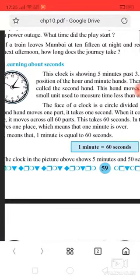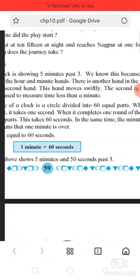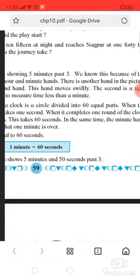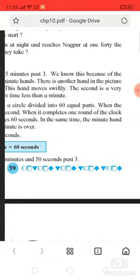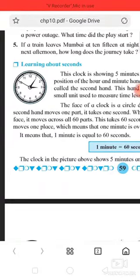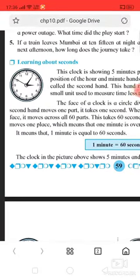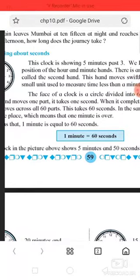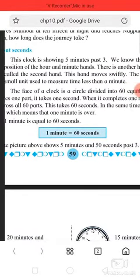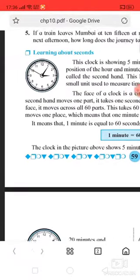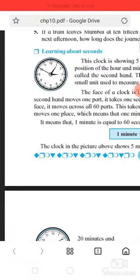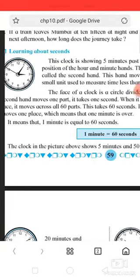We have to divide the clock into 60 equal parts. When the second hand moves one part, it is one second. If the hand moves here to another place, that means one second.